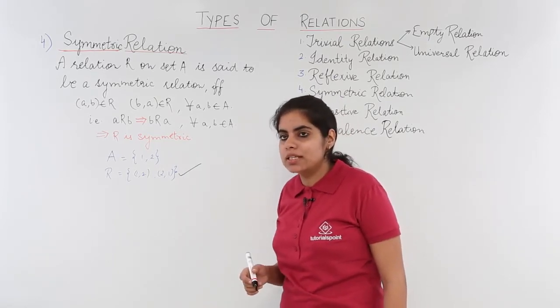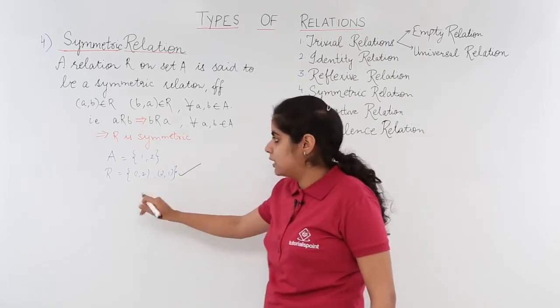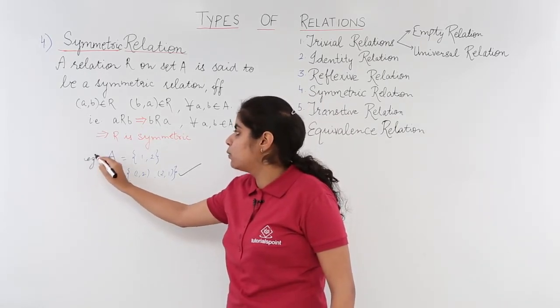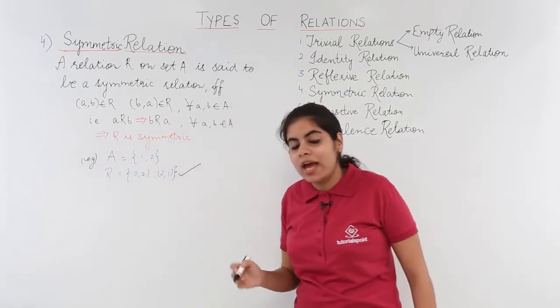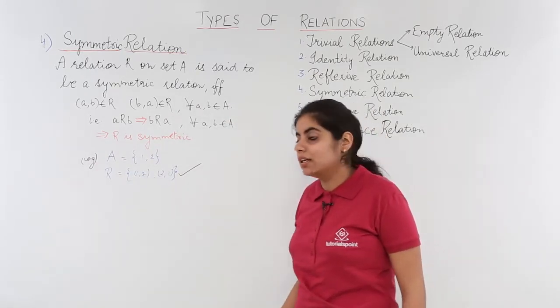Now let's see some other example. This example works when you have already been given a set and you can define symmetric relation out of the same. Let's see another example to this.